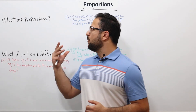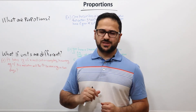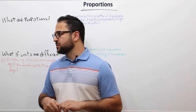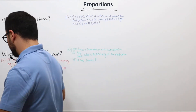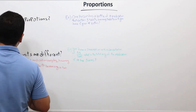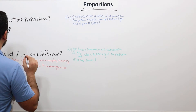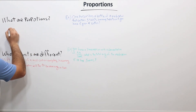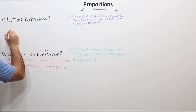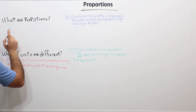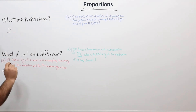So what are proportions? Proportions are basically fractions. There are a couple of components when it comes to proportions. Number one, they are a fraction composed of three known and one unknown value.